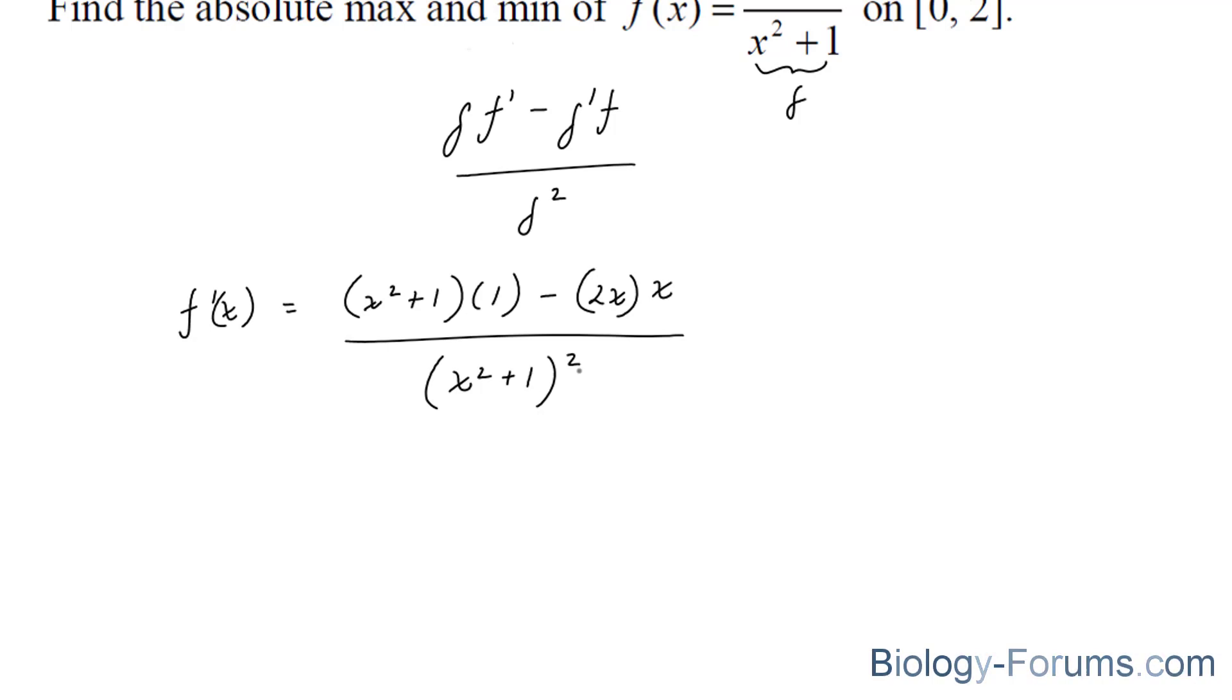What I'll do next is simplify the top. The numerator becomes x squared plus 1 minus 2x squared. At the bottom, we have x squared minus 1 to the power of 2. We'll further simplify this. And if we further simplify that, we end up with negative x squared plus 1 over x squared minus 1 to the power of 2. And this is our f prime.